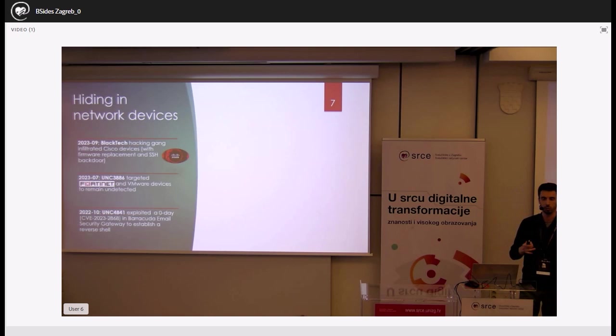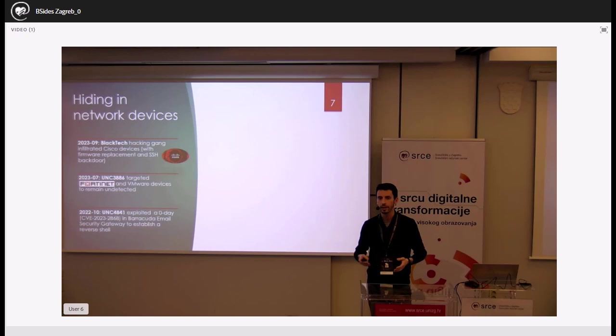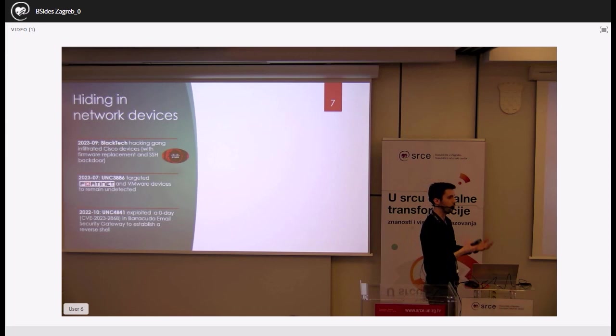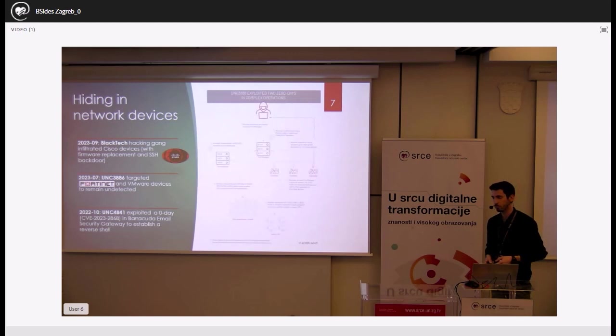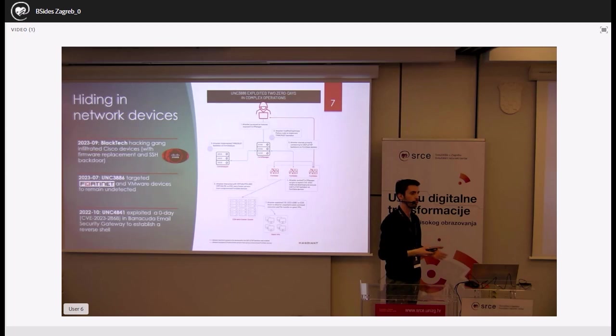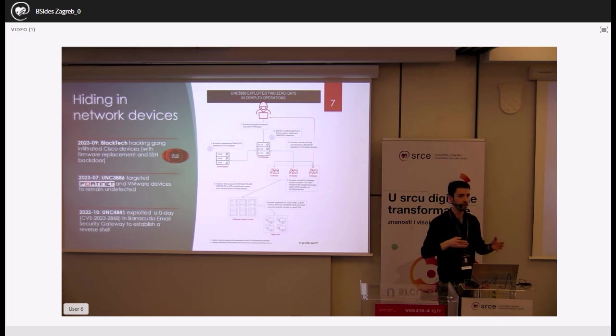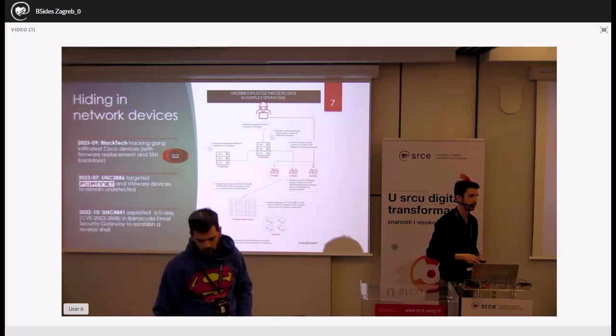Another hiding place is network devices, especially routers and exposed network devices. With recent Cisco attacks, attackers found vulnerabilities and completely rewrote the operating system with a custom implant, staying obfuscated long-term. Similarly with Fortinet, attackers found exposed Fortinet managers, moved to all company firewalls, installed implants, and then targeted Windows and Linux machines — but everything was orchestrated from the Fortinet devices.